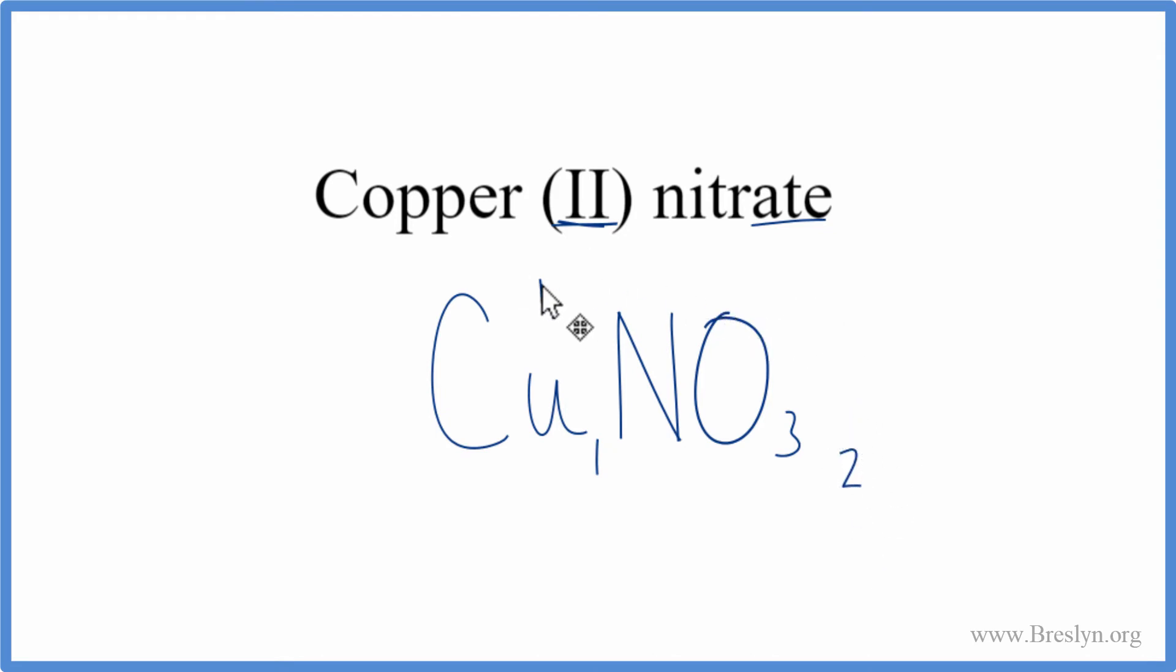Get rid of the charges. And we don't write one by convention. Then we need to put parentheses around the nitrate ion. That's because we have two of these nitrate ions. So this is the formula for copper (II) nitrate.